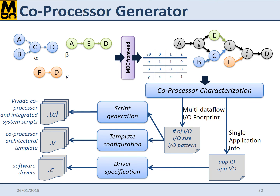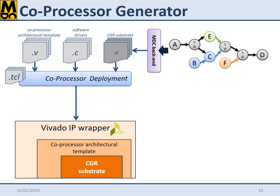The former are adopted to generate, on the one hand, the scripts for the automated generation in the Xilinx Vivado environment of the coprocessor and the integrated system, intended as the interconnection of processor and coprocessor. On the other hand, they are adopted to configure the architectural template of the coprocessor itself, for example to define the state machine and to configure registers. The latter lead to the software driver's generation.